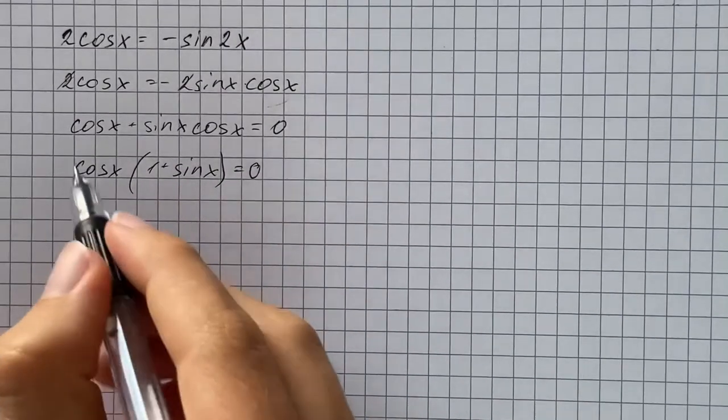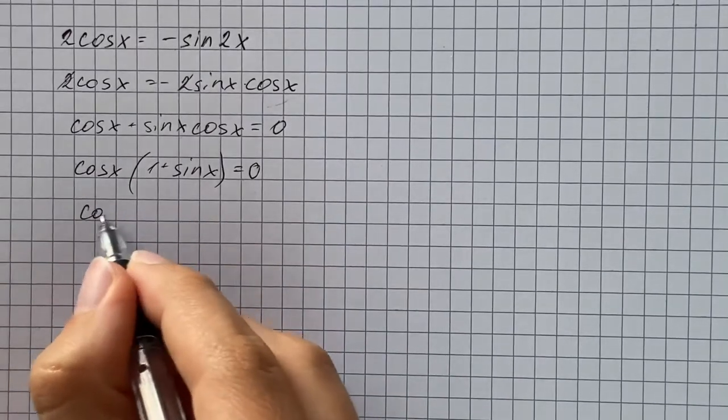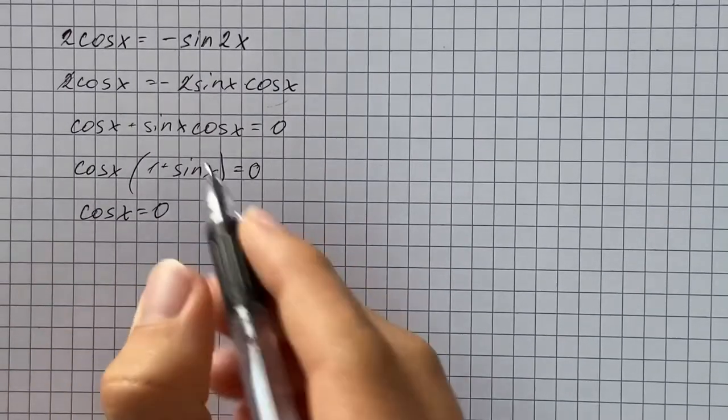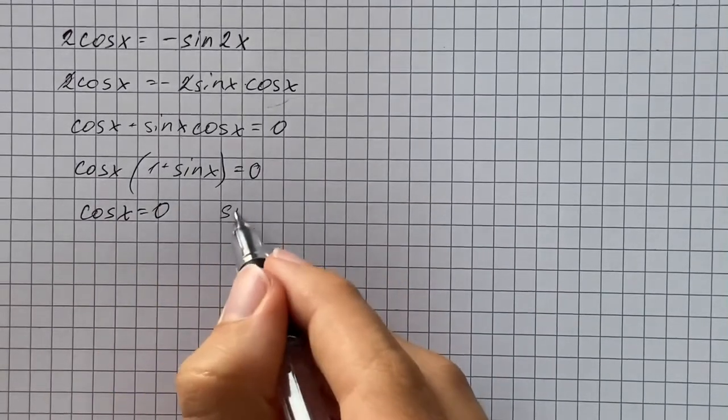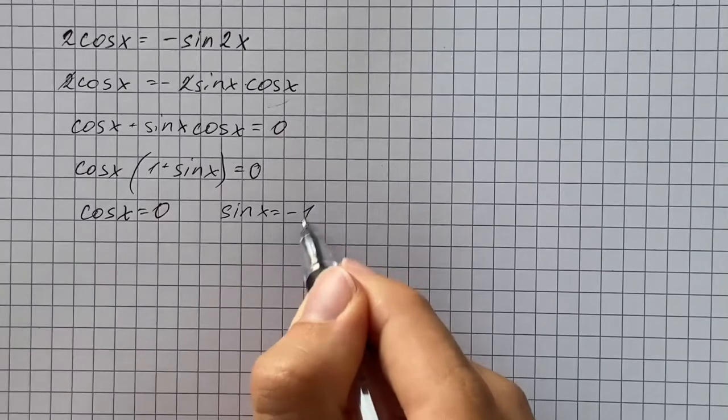So if we set the first factor equals to 0, that's going to be cosine equals 0. And if we set the second factor equals to 0, we get sine of x equals negative 1.